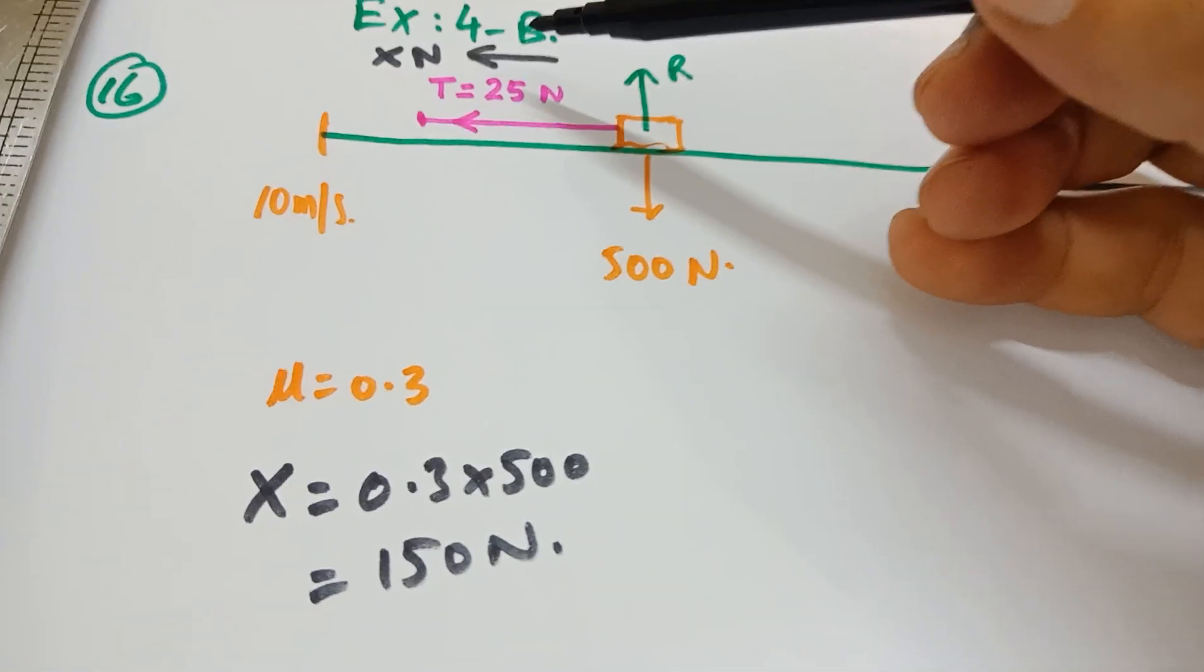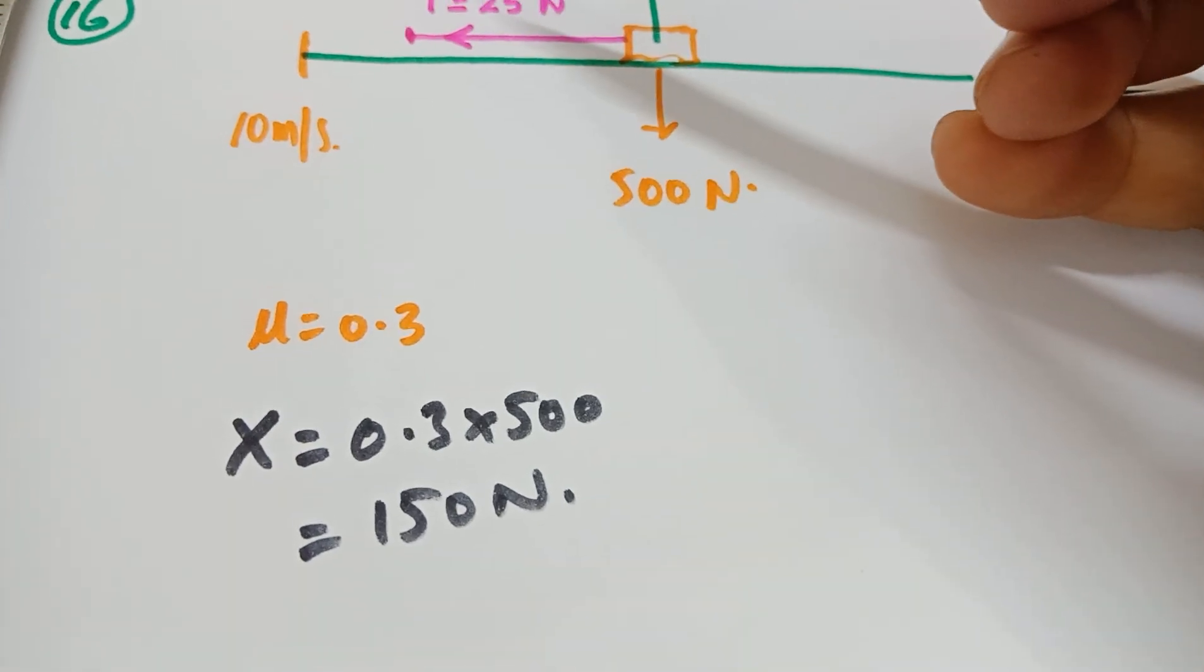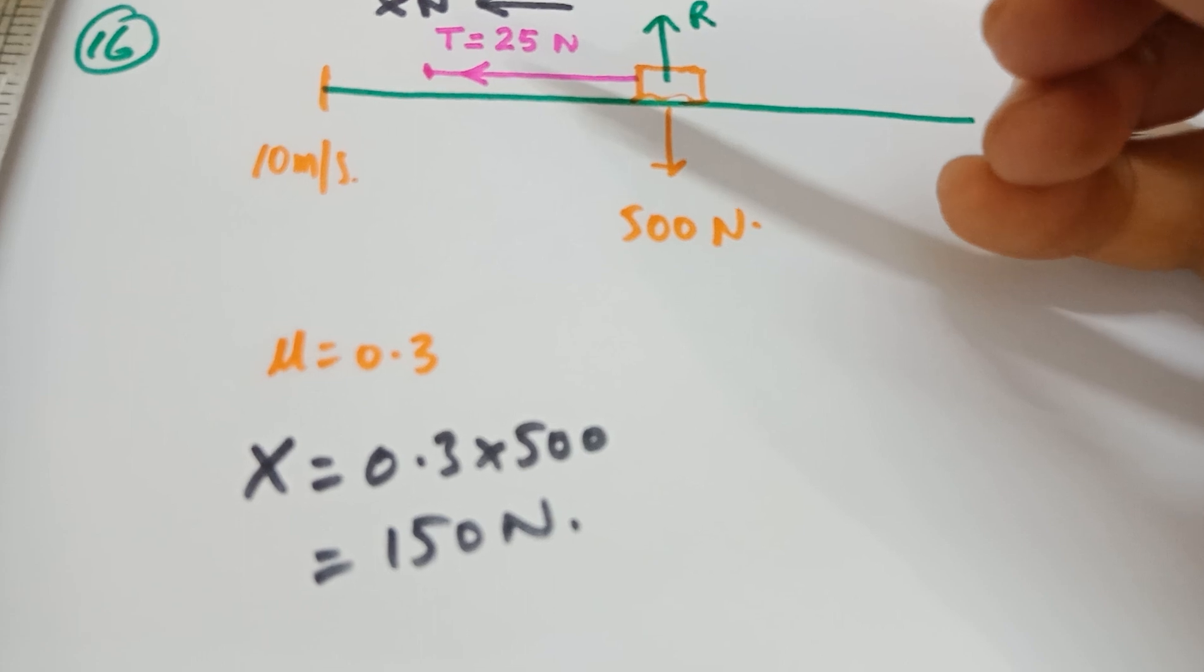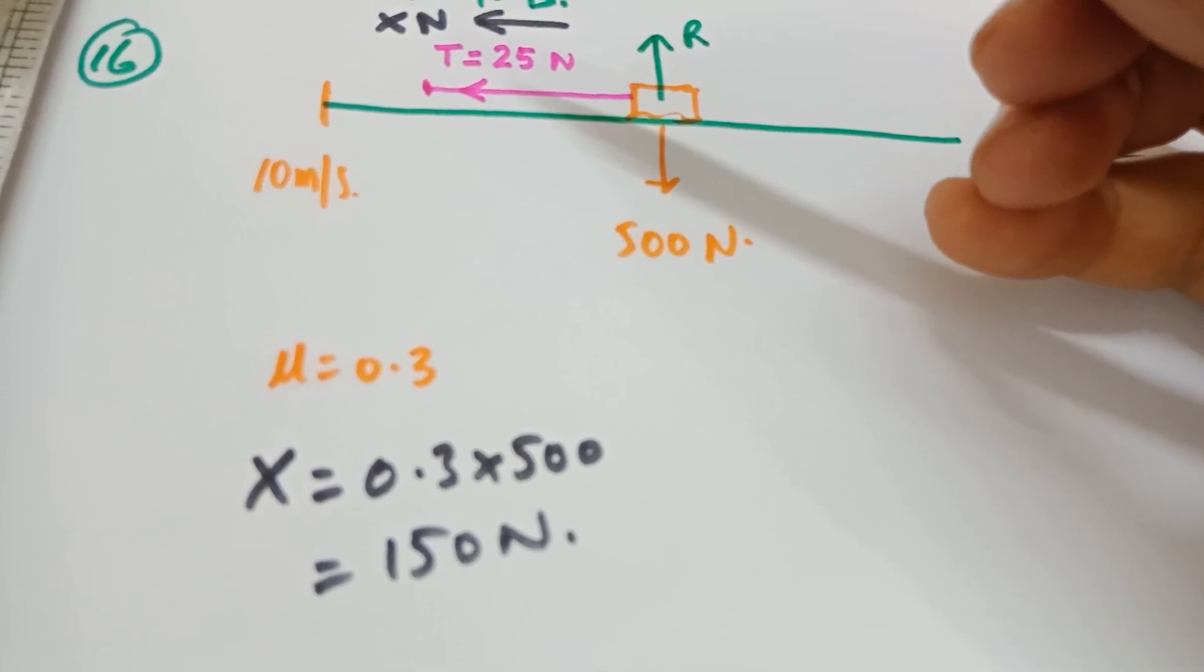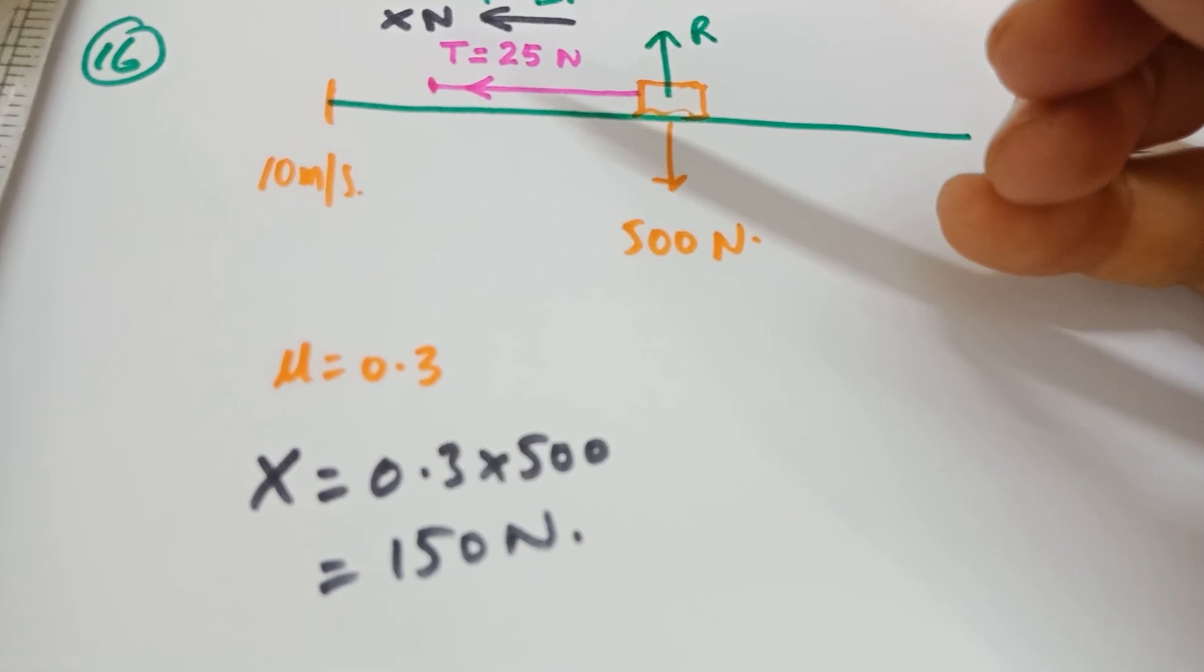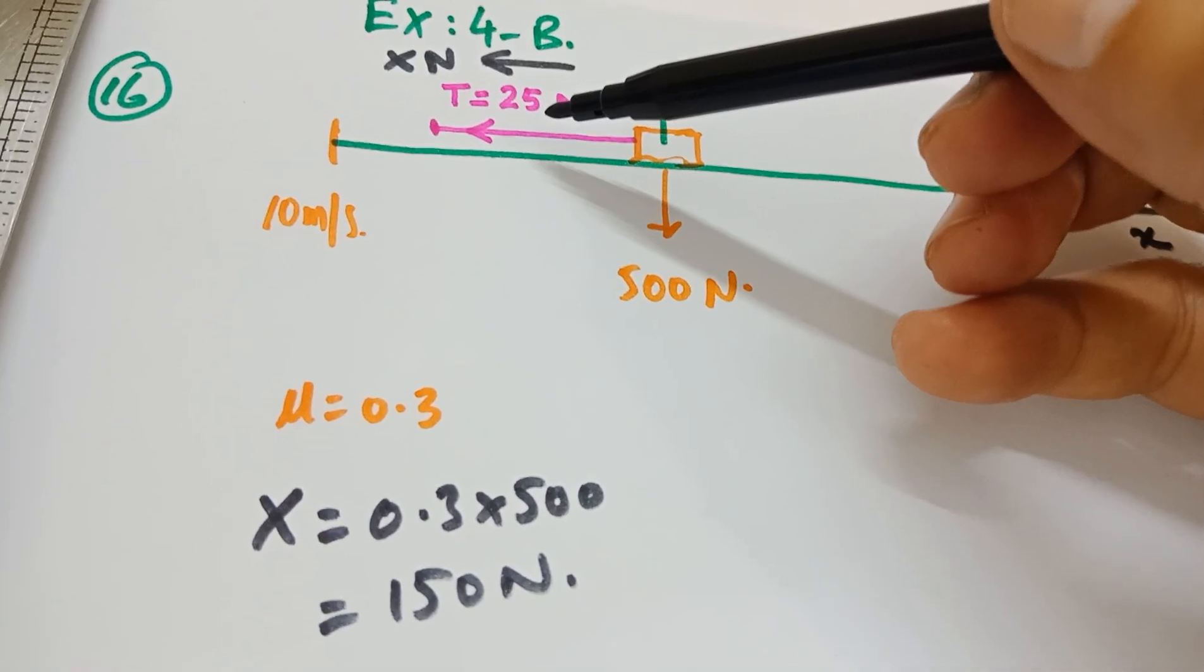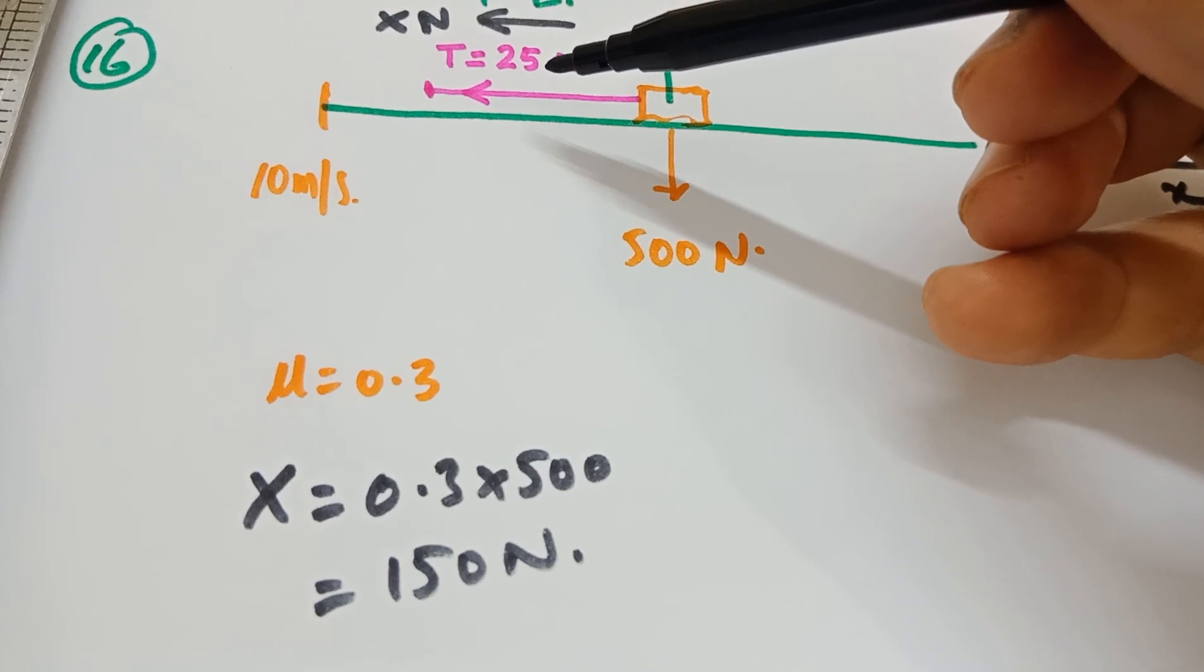The other is, there is another force which is trying to slow it down through a string, providing a tension of 25 N horizontally. So I have shown this in pink, this string, where there is a tension of 25 N in it.